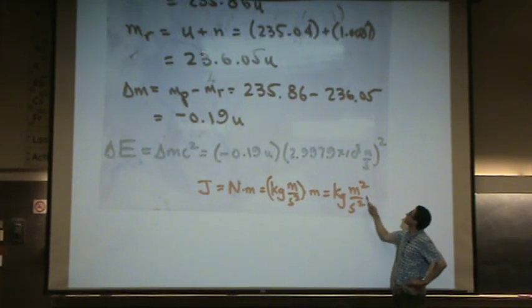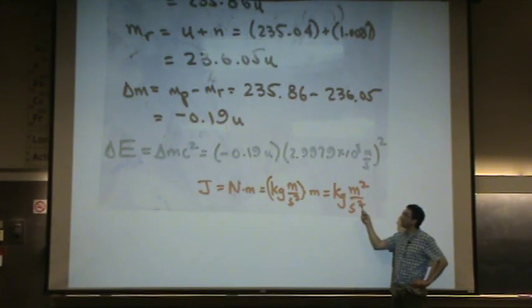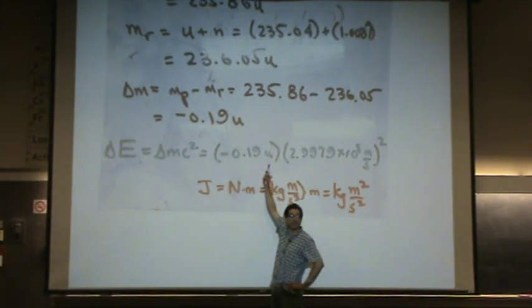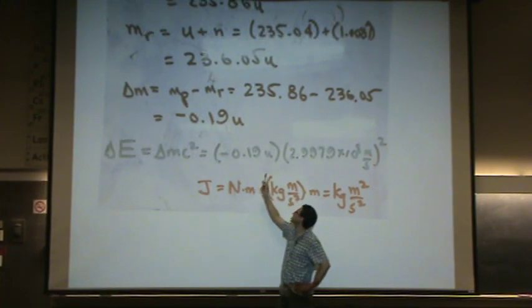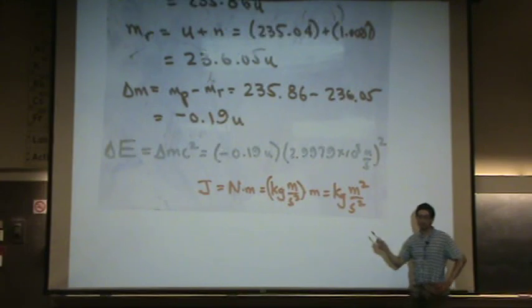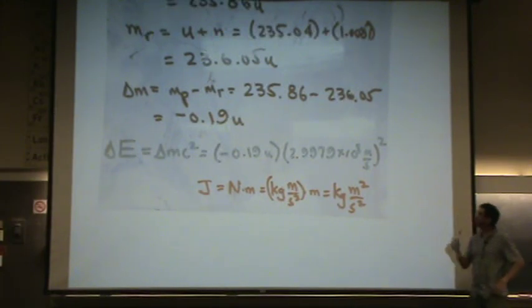We'll get the meter squared per second squared from the speed of light squared. So we've got that part of the joule, but the kilogram, I need to convert this u to kilogram units. So it's kilograms meters squared per second squared, not u times meters squared per second squared. So I need to do a little conversion before I get a final answer in joules.